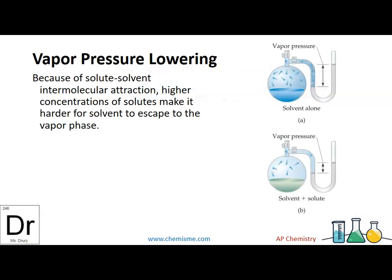The first of the colligative properties is called vapor pressure lowering. If you memorize the names of these properties, you already have an idea of what's going to happen. Because of the solute-solvent interaction, higher concentrations of solute make it harder for the solvent to escape to the vapor phase.